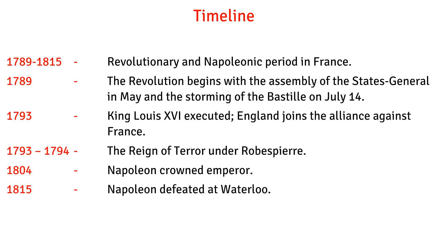So let's have a look at the timeline first. 1789–1815: Revolutionary and Napoleonic Period in France. 1789: The revolution begins with the assembly of the states general in May and the storming of the Bastille on July 14. 1793: King Louis XVI executed. England joins the alliance against France. 1793–1794: The reign of terror under Robespierre. 1804: Napoleon crowned emperor. 1815: Napoleon defeated at Waterloo.